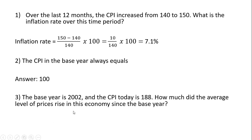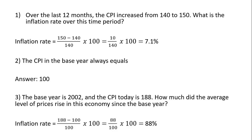Question three. The base year is 2002, and the CPI today is 188. How much did the average level of prices rise in this economy since the base year? In the base year in 2002, the CPI is 100. Today it is 188. To calculate the inflation rate over that time, we use the percentage change formula: 188 minus 100, all divided by 100, then multiplied by 100 — we get an 88% increase in the average level of prices.